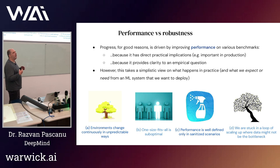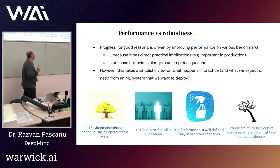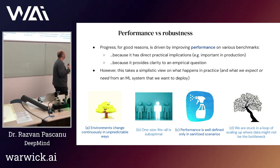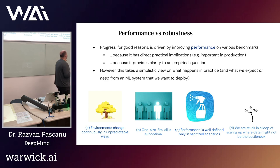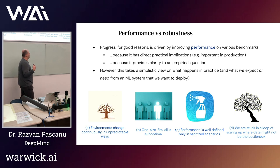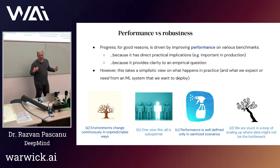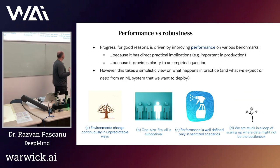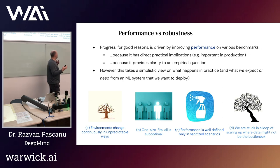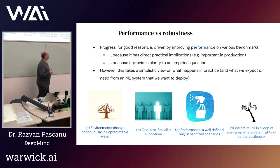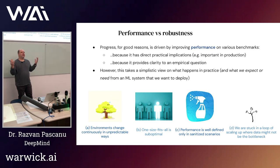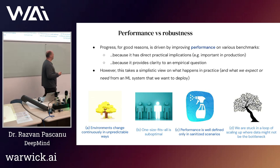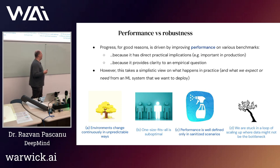The issue is that if we just focus on performance, this gives you a very simplistic view over what we actually care about in these systems. One reason is that every time we have a system that we want to interact with the world, the world keeps changing in sometimes unpredictable ways, and a fixed system cannot deal with that continuous change. Another issue is that focusing on performance leads us to think about one-size-fits-all solutions — the whole trend with large language models is really in this category, where we're trying to build a huge system that's able to do everything, which can be sub-optimal.